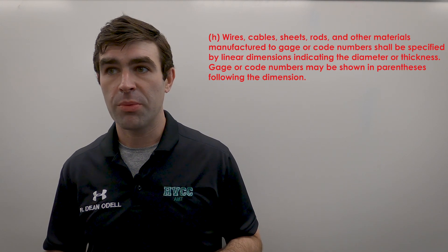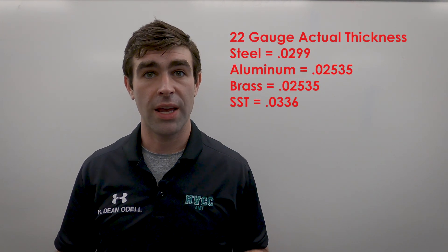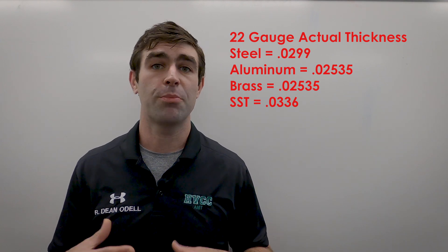Rule H: wires, cables, sheets, rod, and other materials manufactured to gauge or code numbers shall be specified by linear dimensions indicating the diameter or thickness. Gauge or code numbers should be shown in parentheses following the dimension. So if you have a drawing of sheet metal, you put the actual dimension — say 0.030 inches — and then in parentheses '22 gauge.' This lets the manufacturer know you're not specifying a special thickness, since the same gauge number can mean different thicknesses depending on whether it's aluminum, brass, stainless steel, or where the material is sourced.